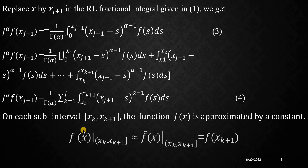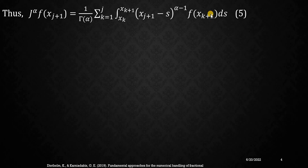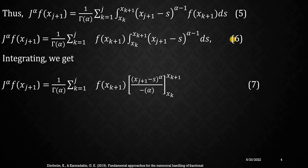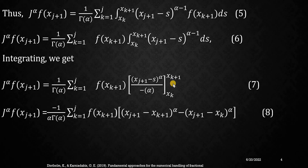On each sub-interval the function is being approximated by a constant, which is f of x_{k+1}. I have substituted this f of x_{k+1} in the previous equation where we had used the summation, so that equation reduces to equation number 5. In equation number 5, I have taken this f function outside of the integral, and then we have equation number 6. Integrating using the simple power rule, you will obtain equation number 7.